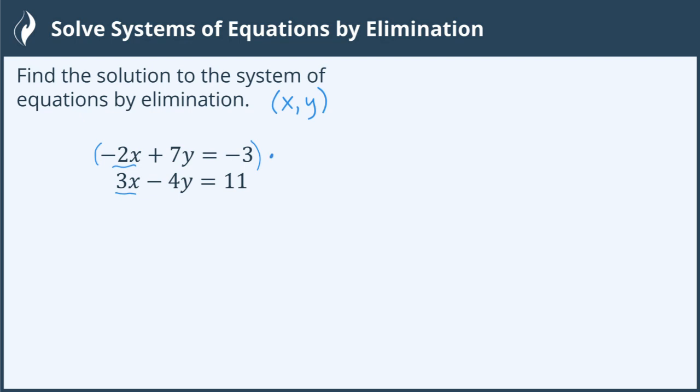Let's multiply this one times 3. And I'm going to multiply everything in that equation times 3. So it's going to become negative 6x plus 21y equals negative 9. Now let's multiply this second equation times 2. And that will give me a 6x minus 8y equals 22.